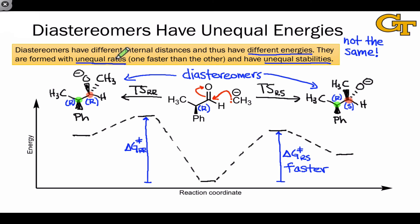The important point here and the key difference with enantiomeric reaction pathways is that the two diastereomers are formed with unequal rates and they have unequal stabilities. So we should expect a difference in the amounts of diastereomers that we get out of a reaction that could produce diastereomers.